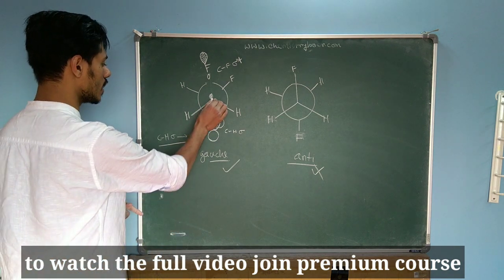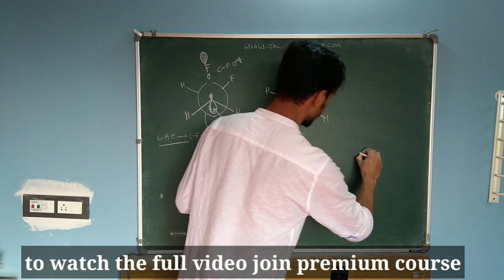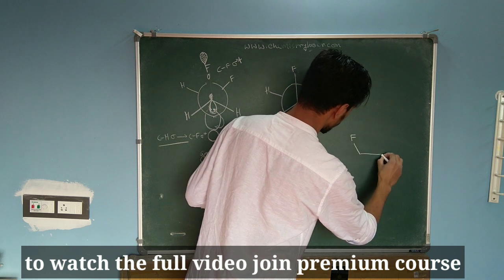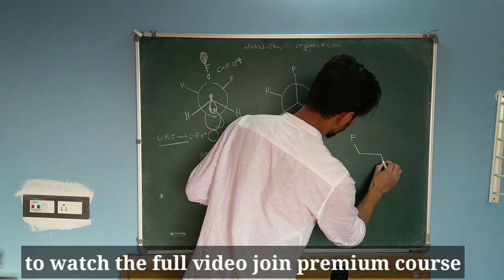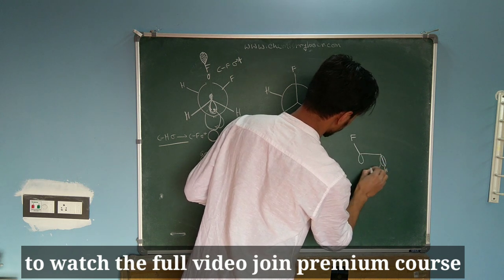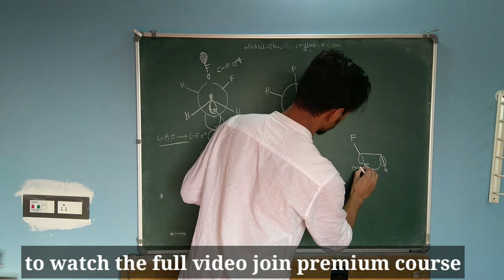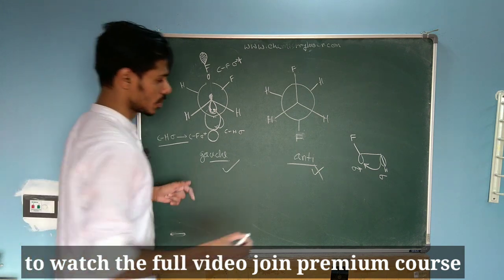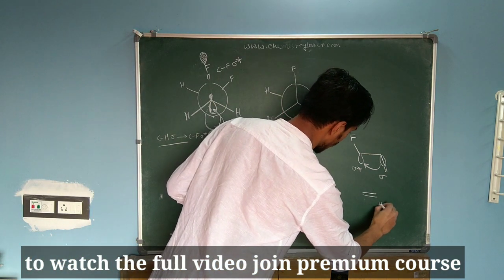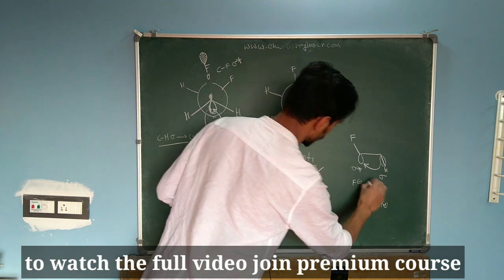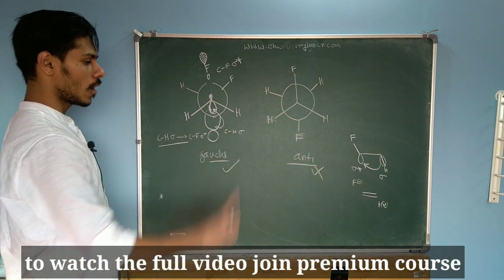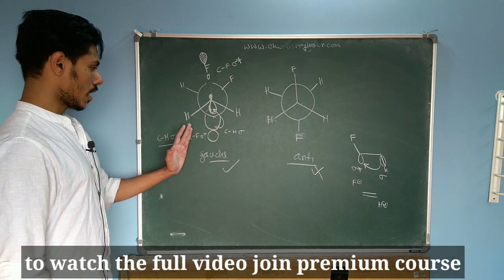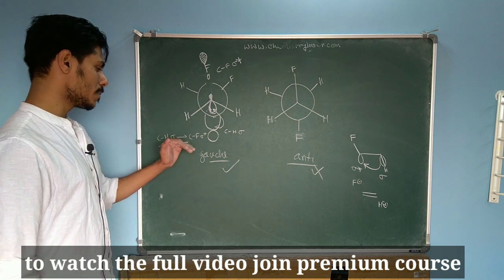This donation is possible because they are parallel to one another. If I draw a simple structure, here you have this fluorine and here you have this C-H bond, so from this C-H bond you can donate electrons to the sigma star. This is basically a kind of hyperconjugation — a hyperconjugating structure is present here. For this to happen, the CH sigma and CF sigma star need to be parallel to one another.